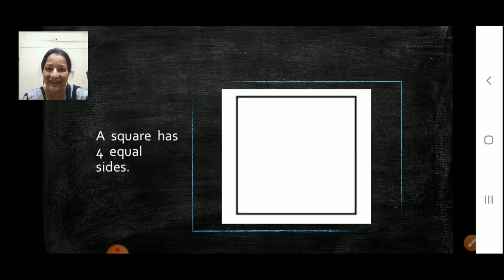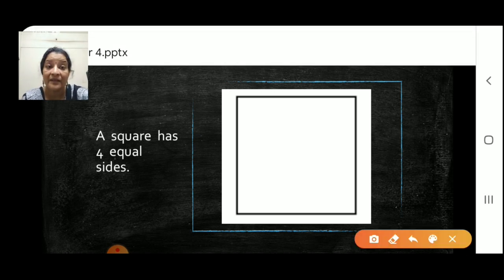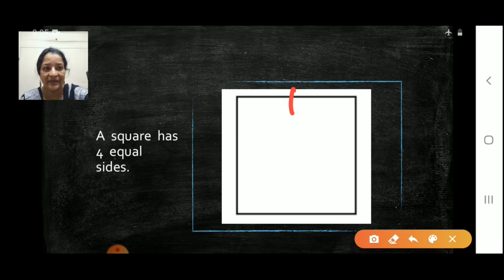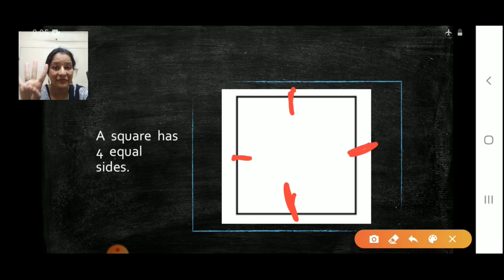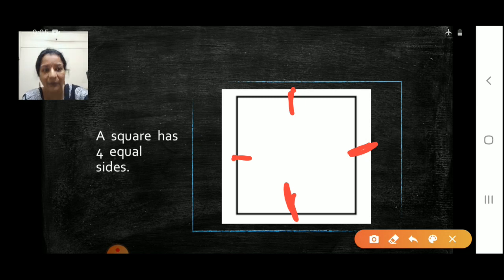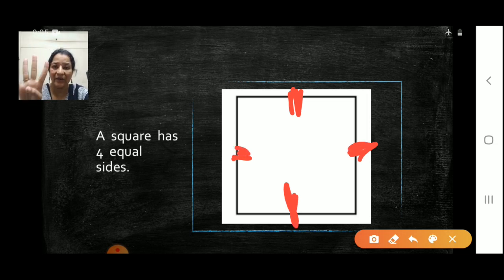Next, a square. A square is a shape. You already know that. Now let us count the sides. One side, this is two, this is three, and this is four. How many sides? Four sides. A square has four equal sides. Let us see one more time. One, two, three and four. Four equal sides in a square.